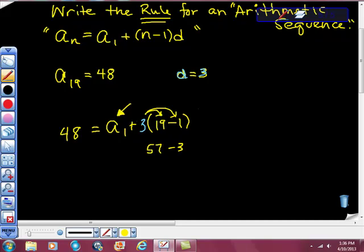Minus 3 is a sub 1, equals a sub 1, I'm sorry, a sub 1, 48 here so far, I hope. I'm going to get that 48 is equal to the first term. Simplify this, 57 minus 3 is 54, so plus 54.